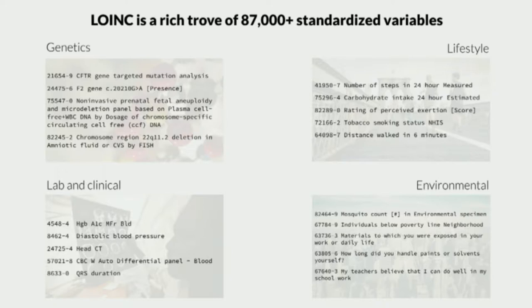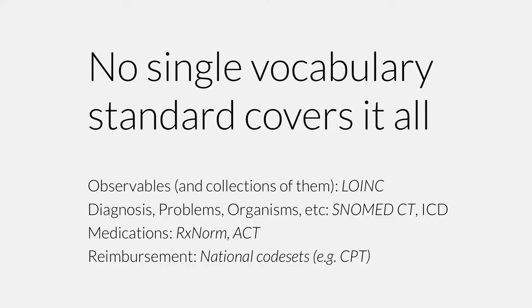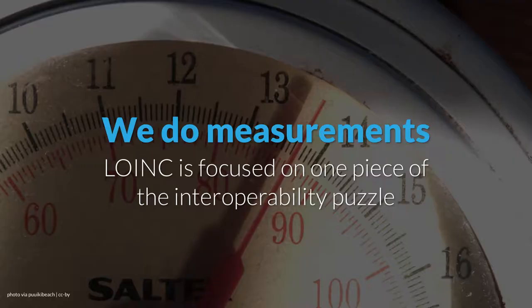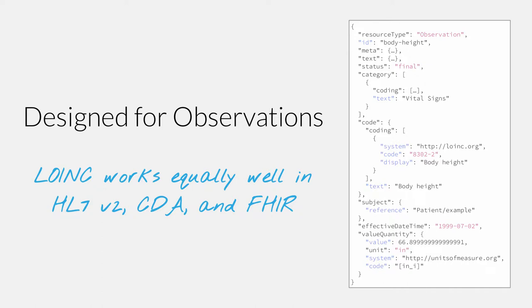We've got genetic data, lifestyle data, and the sort of meat of what's in most EHR systems — laboratory tests. About two-thirds of the LOINC database covers lab stuff, but other factors as well. LOINC is focused on one part of the health vocabulary space — observations and collections of them. In lots of other contexts you're going to need other terminologies to cover diagnoses, medications, or reimbursement use cases. LOINC was designed specifically to be observation identifiers — that's what the OI in LOINC stands for — originally in the context of HL7 version 2 and early ASTM standards.